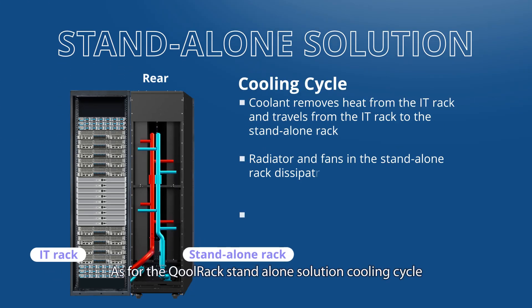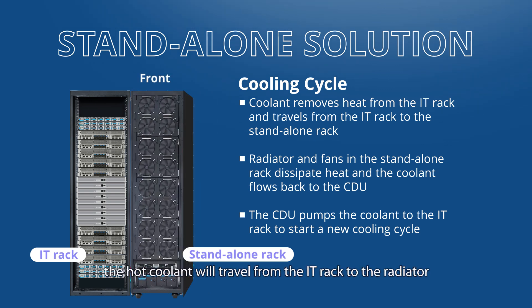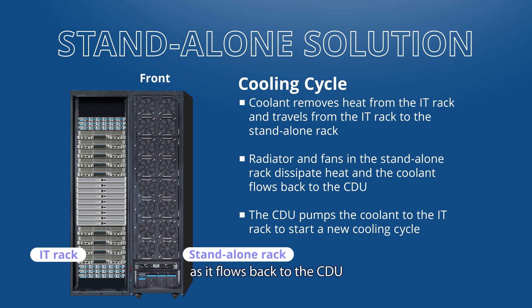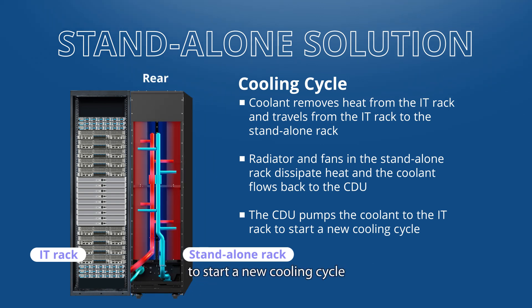For the CoalRack standalone solution cooling cycle, hot coolant travels from the IT rack to the radiator, and then the fans cool down the coolant as it flows back to the CDU to start a new cooling cycle.